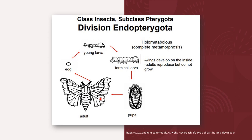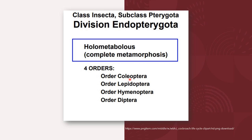This diagram represents the developmental stages in the life cycle of holometabolous insects, classified under the superorder Endopterygota. The life stages include the egg, young larva, terminal larva, pupa, and adult. Some examples of orders exhibiting holometabolous metamorphosis are the orders Coleoptera, Lepidoptera, Hymenoptera, and Diptera.